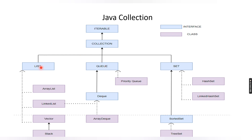The Collection interface extends the Iterable interface. Different types of interfaces such as List, Queue, and Set all extend the Collection interface. As per these interfaces, the classes implement that particular interface. For example, ArrayList and LinkedList implement the List interface, while HashSet and LinkedHashSet implement the Set interface.